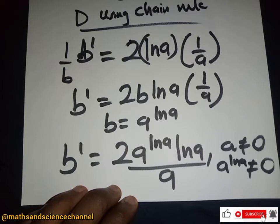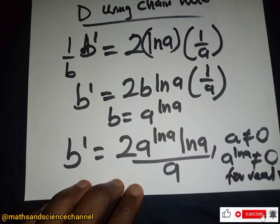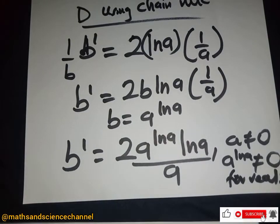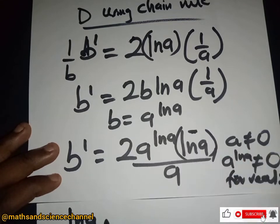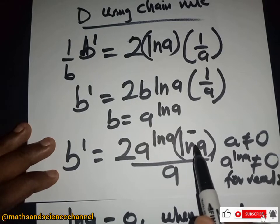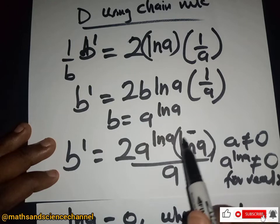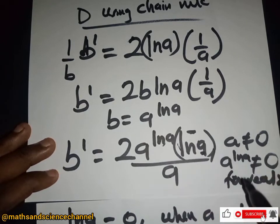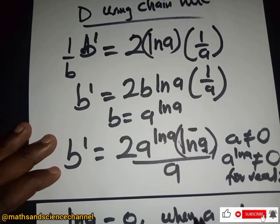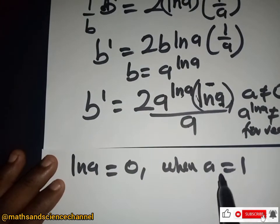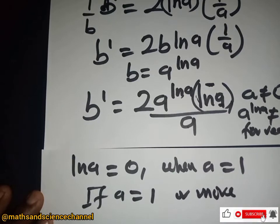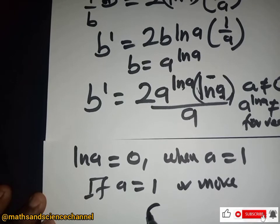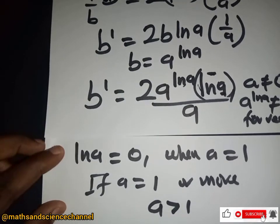For real values, a ln a should not equal zero. Looking at ln a: ln a equals zero when a equals 1. So if a equals 1 or more — that is, a is greater than or equal to 1 — we can take values like 1, 2, 3, and a is just greater than one.